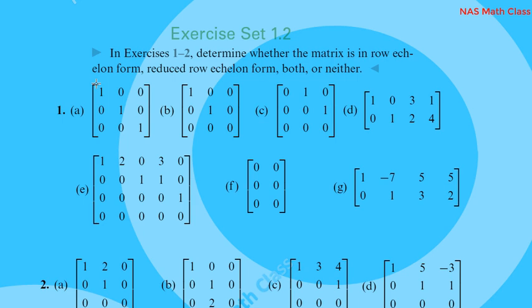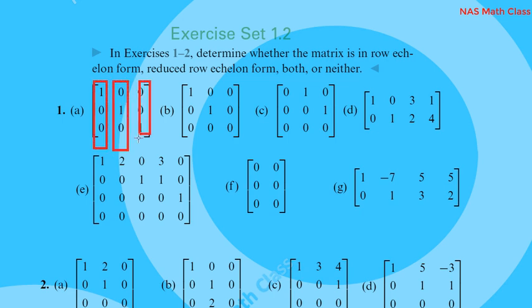We will learn how to identify the leading one. The leading one is the first non-zero element in a row. Here, this is the leading one, this is the leading one, this is the leading one — it is the leading one. It is in reduced row echelon form.